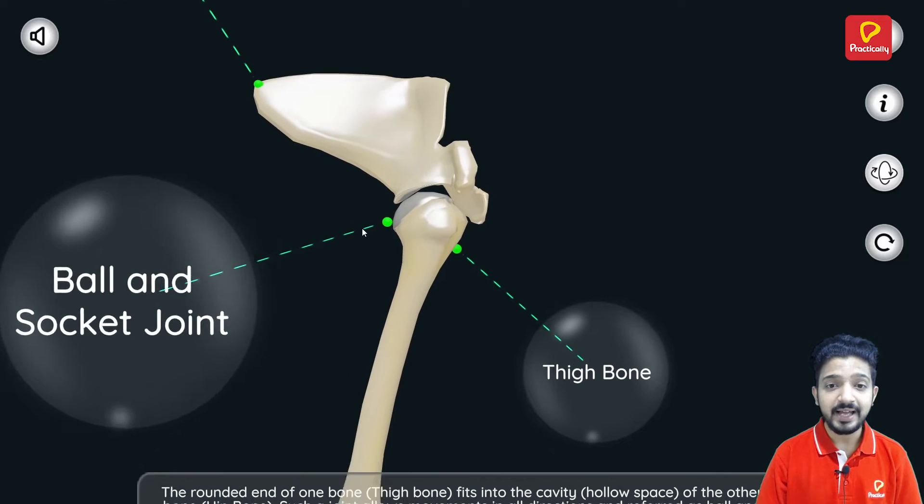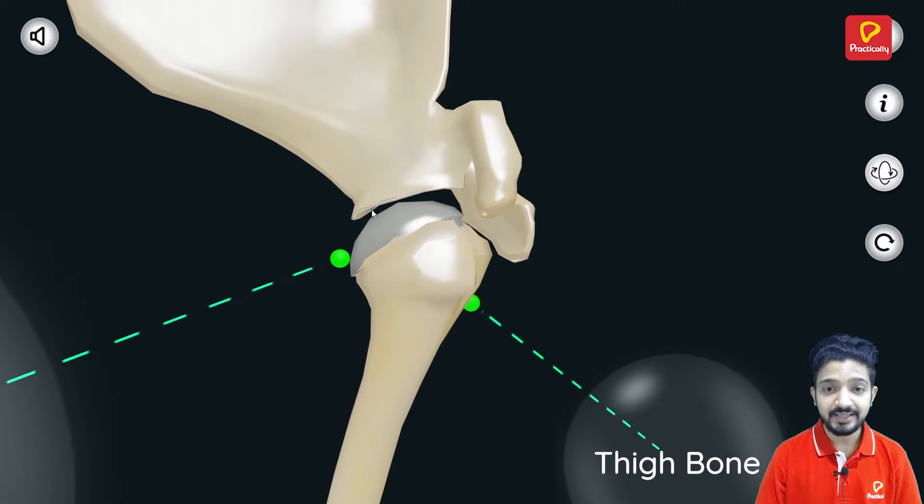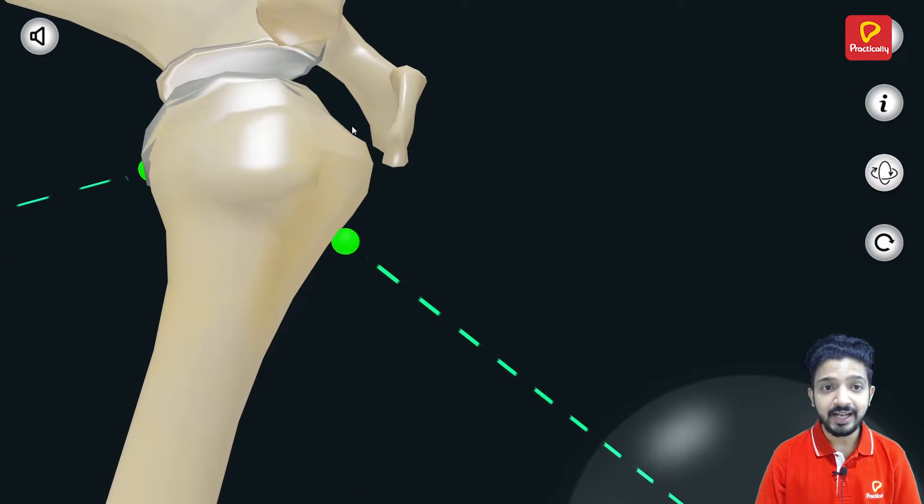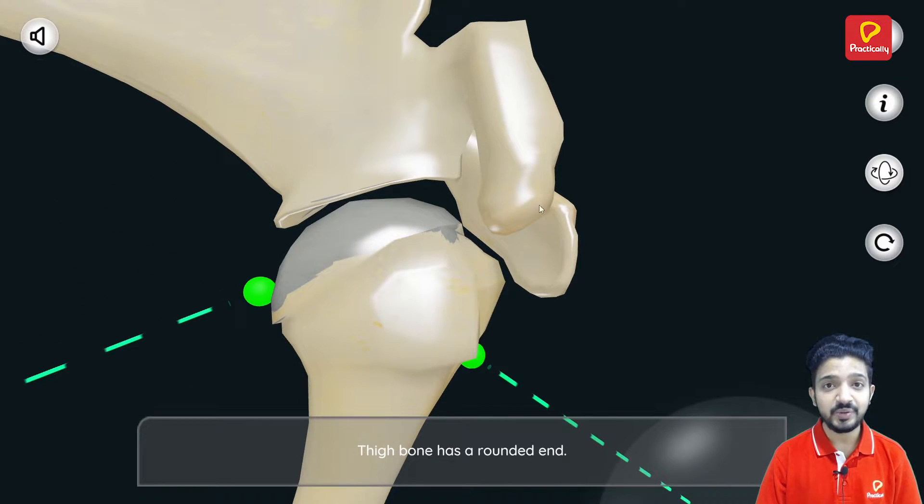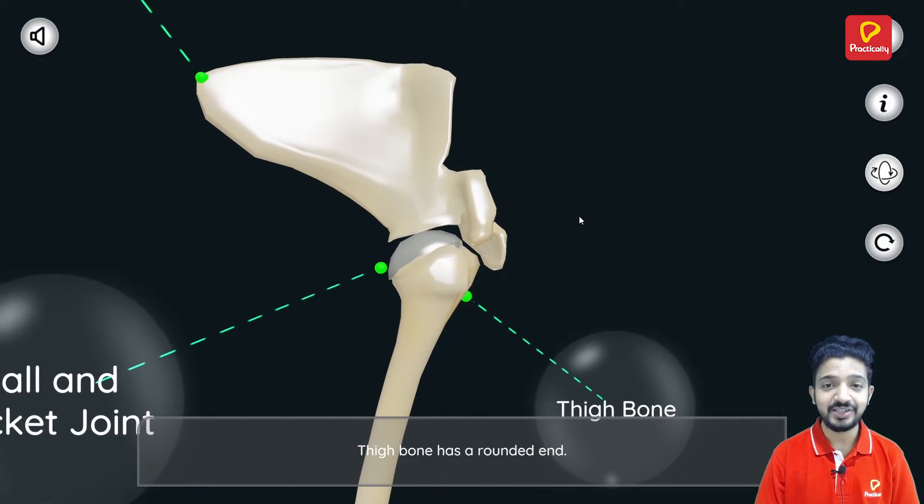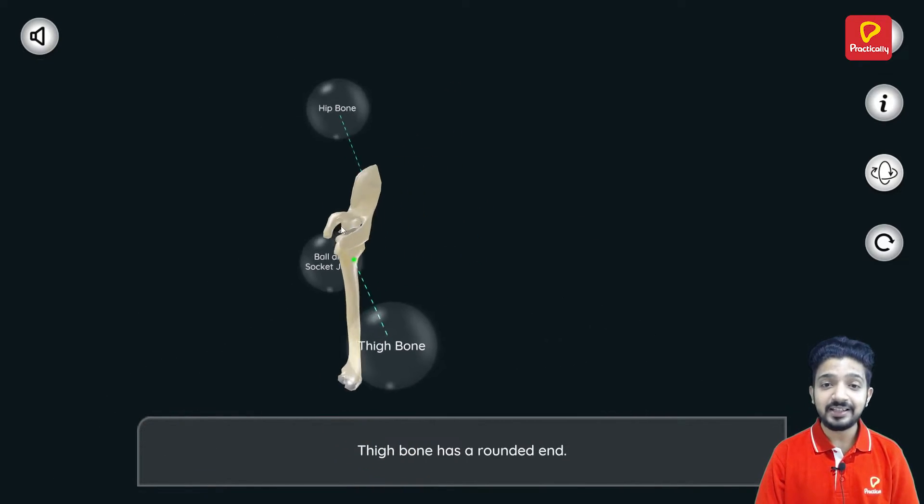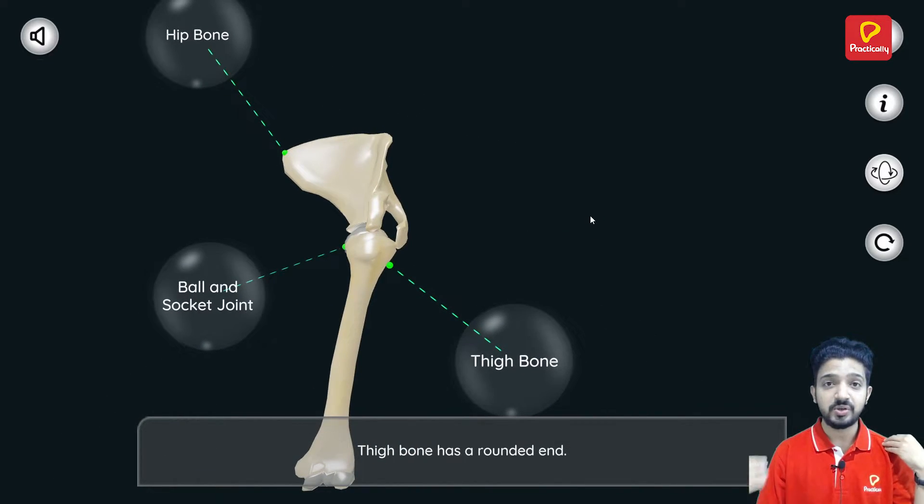The hip bone has the curved cup-like structure and the thigh bone has the rounded structure which fits into it and rotates in different directions to allow free movements. Another example of ball and socket joint is the shoulder joint which also allows the motion freely.